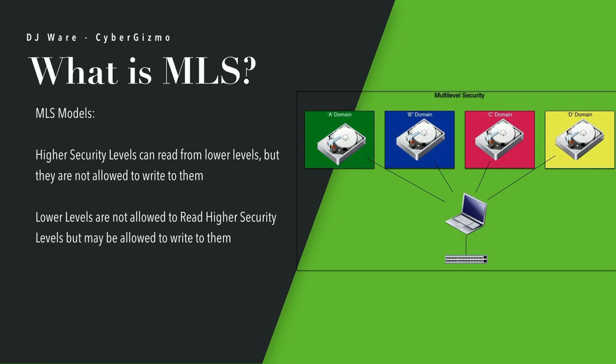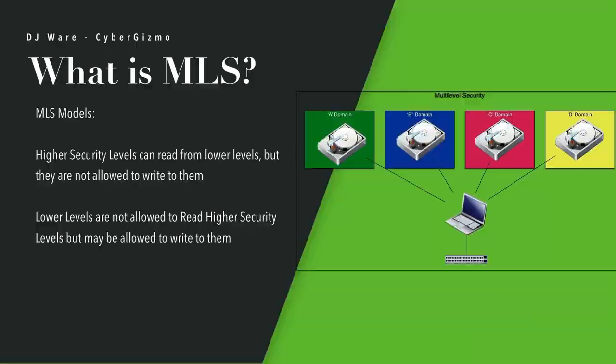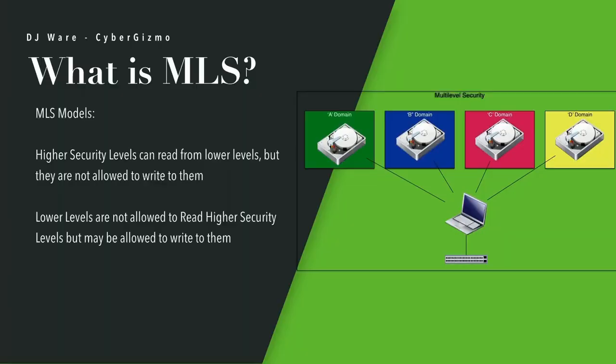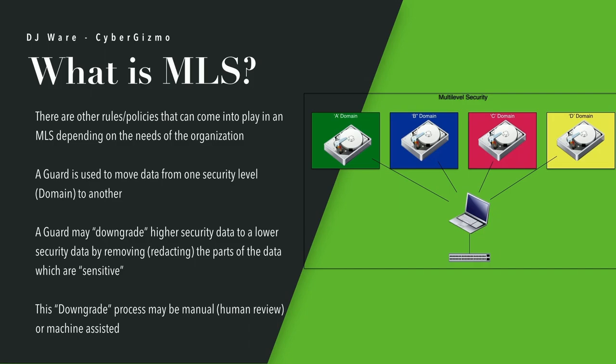A user in domain D can read from C, B, and A, but they're not allowed to write to them — because the problem is you might be spilling data which is in domain D into those other domains. So write is disabled, but you are allowed to read from those areas. In contrast, lower levels are not allowed to read from higher security levels, but they are allowed or might be allowed to write to them. That would be a way to move data from lower security levels to higher ones, which is consistent with users on higher levels being able to see data on the lower.